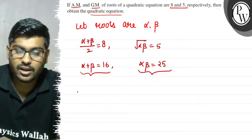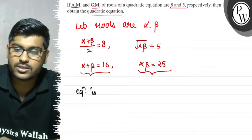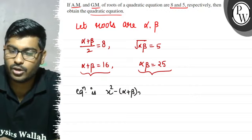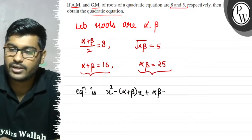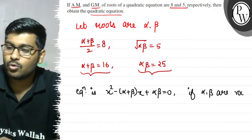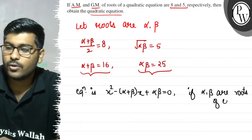Here we know that the equation is x square minus alpha plus beta into x plus alpha beta equals to 0 if alpha and beta are roots of equation.